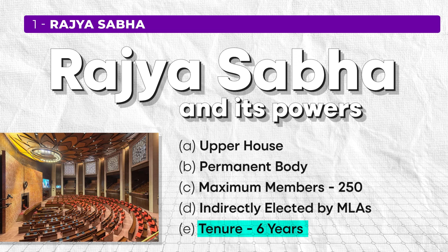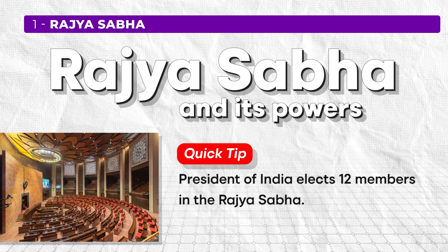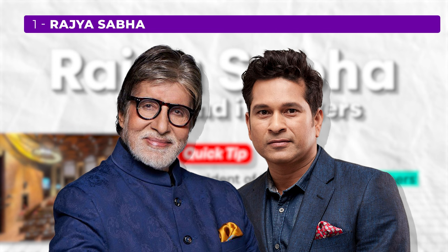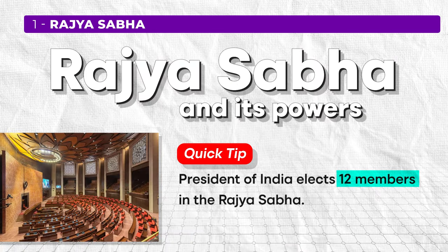These are facts you need to memorize. The members of the Rajya Sabha are elected by MLAs, so the general public does not elect Rajya Sabha members. A quick tip: the President of India nominates 12 members in the Rajya Sabha based on their excellence in the fields of literature, sports, and acting. For example, Sachin Tendulkar and Amitabh Bachchan have served as members of Rajya Sabha, nominated by the President of India on the basis of their excellence in specific fields.